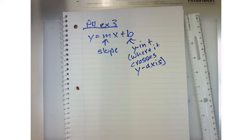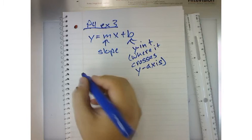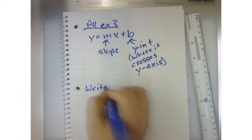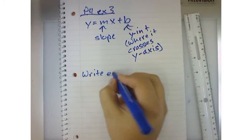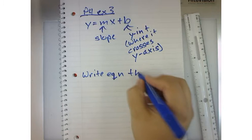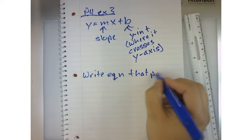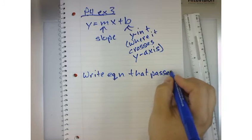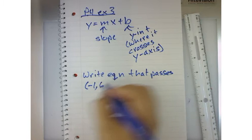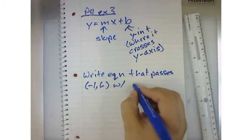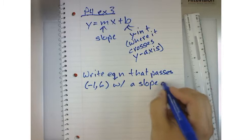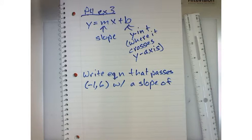So example number three says, write the equation of the line that passes through the point negative one comma six with a slope of three.